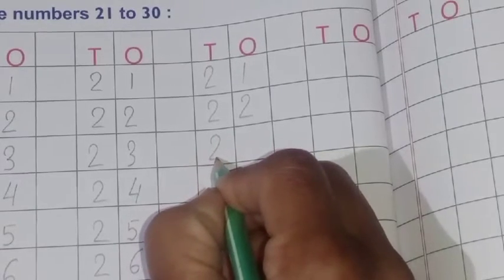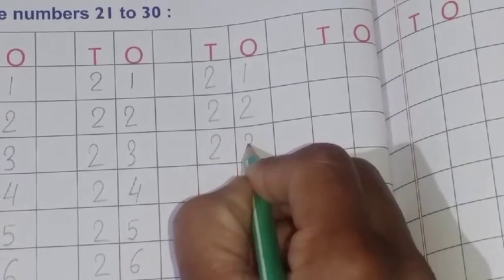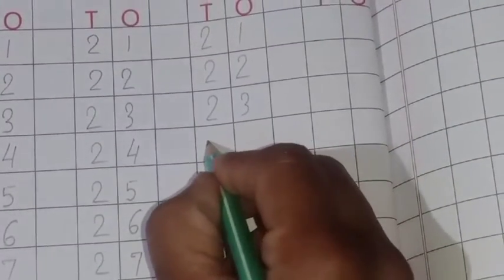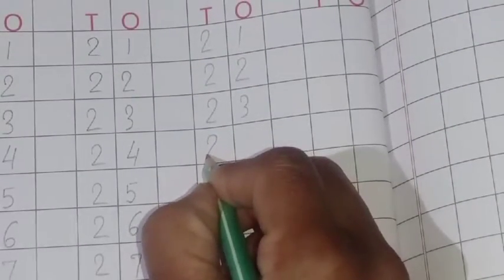T-W-E-N-T-Y, twenty. T-H-R-E-E, three. Okay.